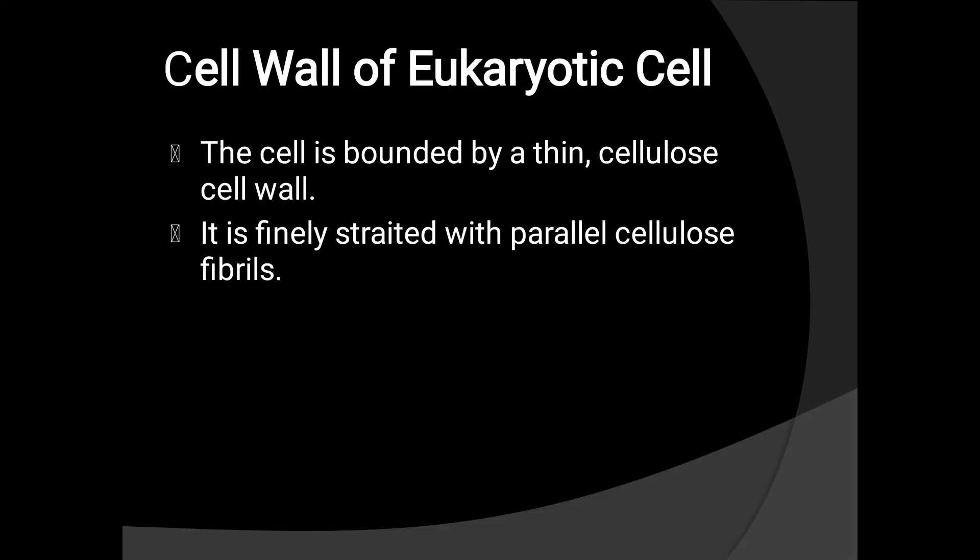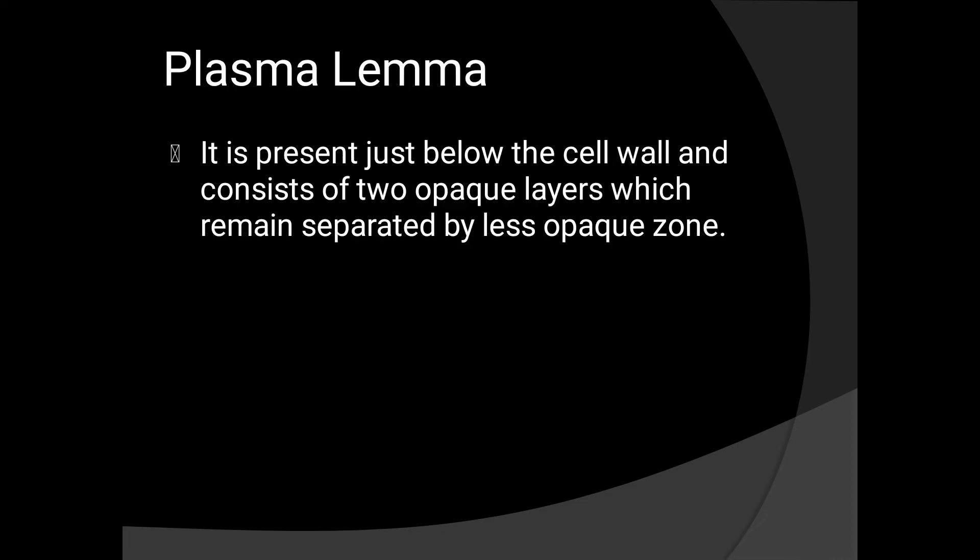Cell wall. It is bounded by a thin cellulose cell wall. It is finely structured with parallel cellulose fibrils. Plasmalemma. It is present just below the cell wall. It consists of two opaque layers which remain separated by a less opaque zone.